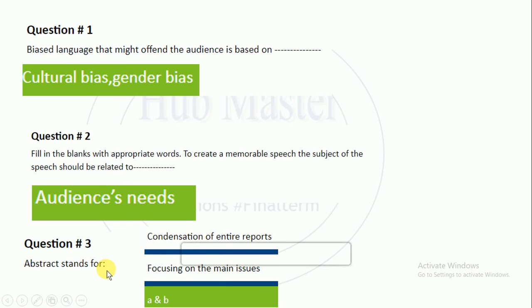Abstracts are called the condensation of entire reports, focusing on the main issue. You have two things to choose from. Most people understand abstracts as a summary — if you create a summary of two points, you can call it an abstract.